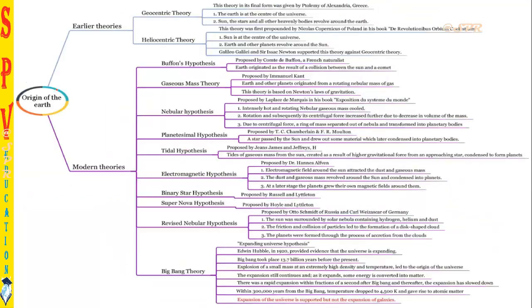Now we shall see the origin of earth — this is the first topic I'll be dealing with. We don't have any chance to go back and see how the earth originated, but the origin of earth can be understood through different theories proposed by scientists based on available evidence. There are two types: earlier theories and modern theories. Earlier theories are from thousands of years ago; modern theories build on those earlier ideas.